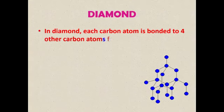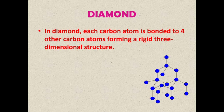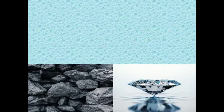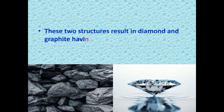In diamond, each carbon atom is bonded to four other carbon atoms, forming a rigid three-dimensional structure.